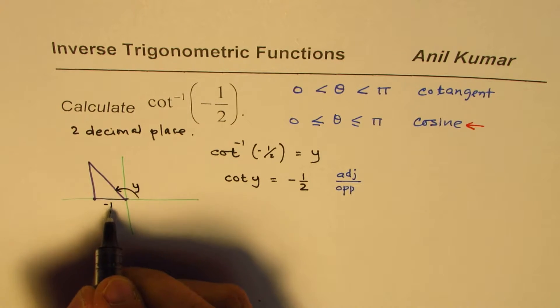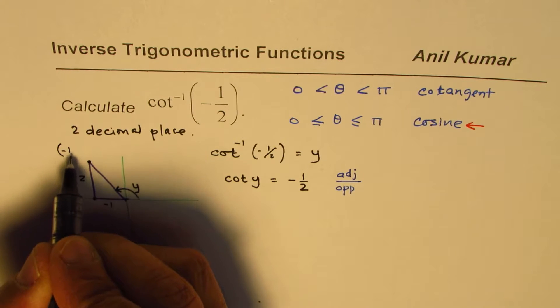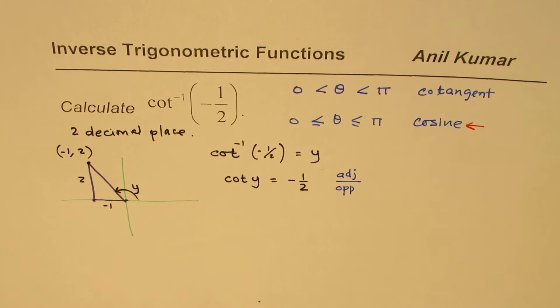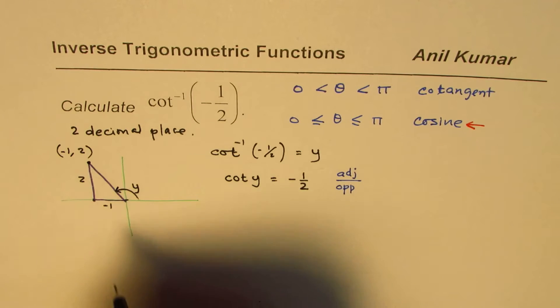This is negative 1, and that is 2 for you. Or we can say the coordinates of this point is minus 1, 2. Does it make sense to you? So, that is how it is.